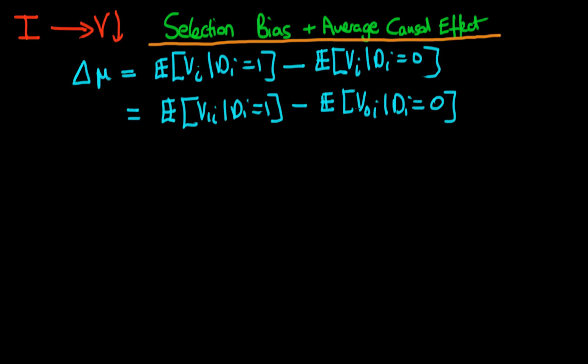In this video we're going to continue to discuss the concept of causality in econometrics, and in particular we're going to discuss the concepts of selection bias and the average causal effect. In the last video we discussed the situation where we're interested in whether levels of infrastructure spending lead to declines in the rates of violence in regions or conflict zones. The problem with simply comparing the mean level of violence in states which did receive infrastructure spending with those which didn't was that there was a positive selection: states with a higher level of violence were more likely to receive infrastructure spending.